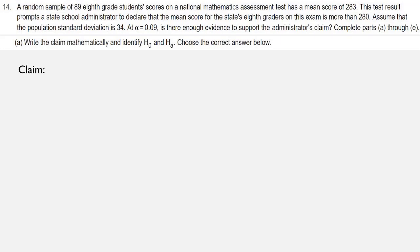The claim made by this administrator is that the mean is more than 280. So mu greater than 280 is the claim. Since there's no statement of equality there, that would be HA. The complementary hypothesis to a greater than would be a less than or equal to. So the other hypothesis is mu less than or equal to 280, which would be H0.